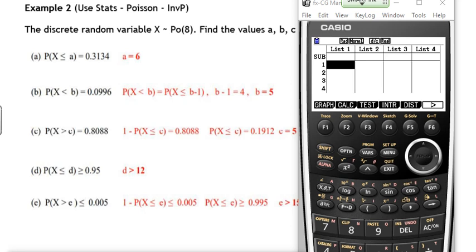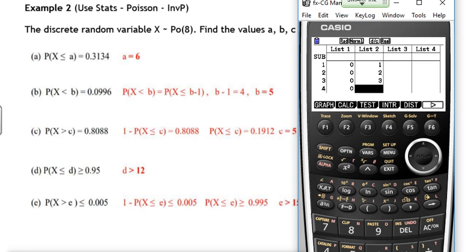an alternative is to set up at the start of the question the possible values that x could take. So if you put a load of zeros in list 1 and then ascending numbers in list 2, up to say about 10, you may get a lambda value that's bigger than that, in which case you'd need more.